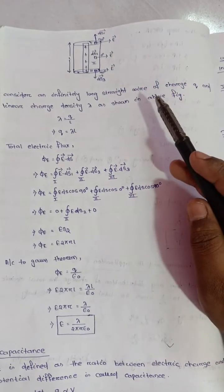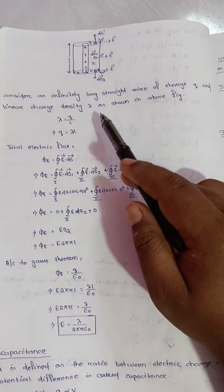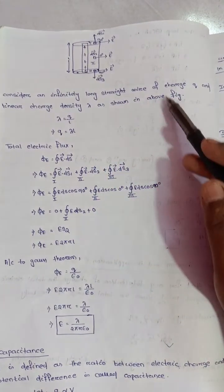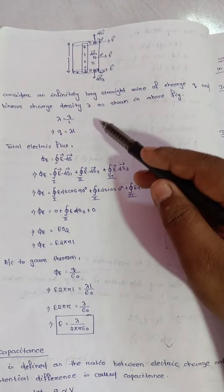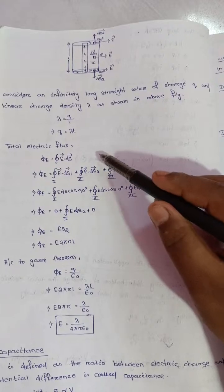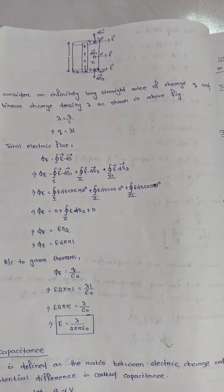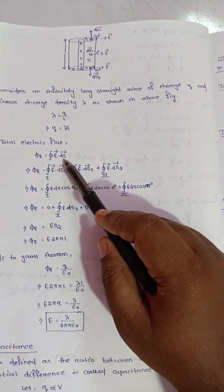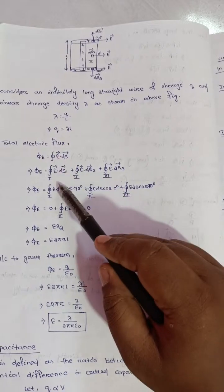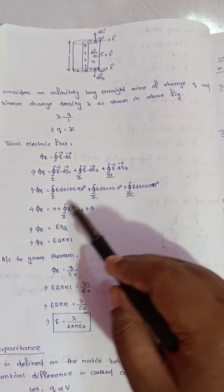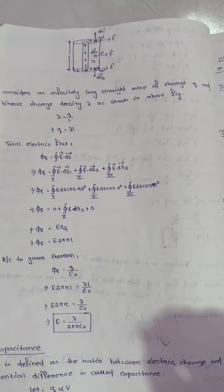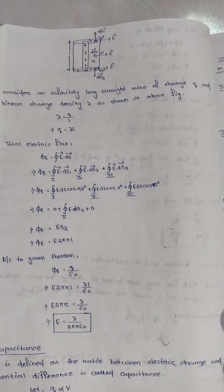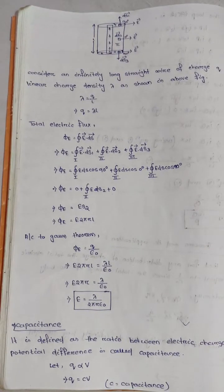Consider an infinitely long straight wire with linear charge density λ, where λ = q/l. Using Gauss's theorem, we evaluate ∮ E · ds over a cylindrical Gaussian surface with components ds₁, ds₂, ds₃. The derivation is straightforward. If you practice this, you will get full marks. This is the Gauss theorem and its application.